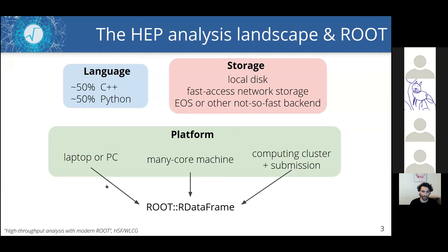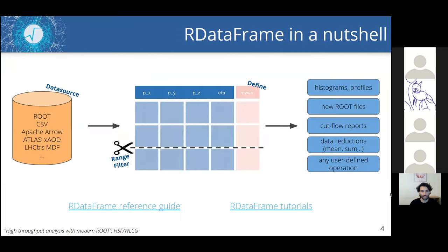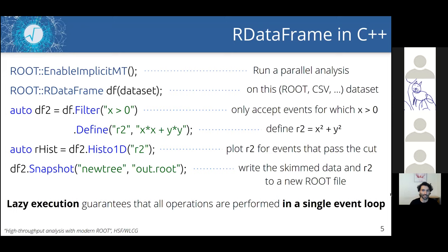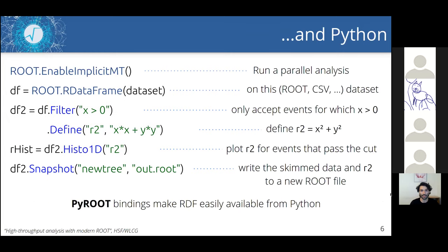That single entry point is our RDataFrame — a high-level interface to data that can be stored in various formats. It allows a wide range of operations like defining new columns, selecting important events for your analysis, creating histograms, and many more. The programming model is a declarative one: the user defines a set of operations that form a computational graph, and RDataFrame makes sure to run this graph lazily in a single event loop.